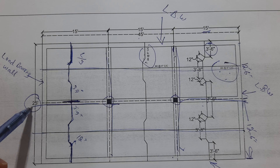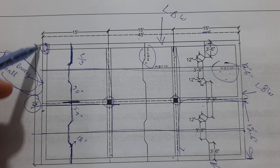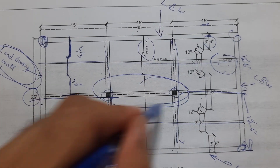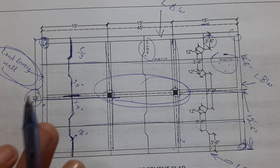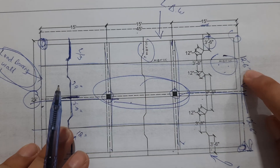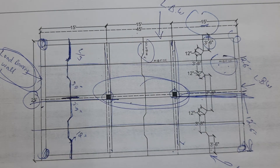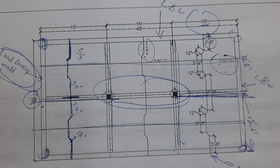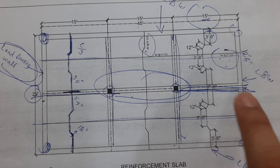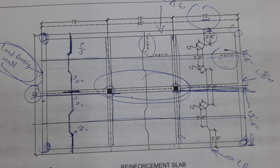These beams are supported on top of the load bearing walls because there is no column support at the corners. We have only two columns, and from these two columns we provide beams that are supported by load bearing walls — 12 feet 6 inches on one side and 15 feet on the other. This short video was to guide you for slab steel reinforcement for a 45 by 25 feet slab. Thanks for watching — see you in the next video.